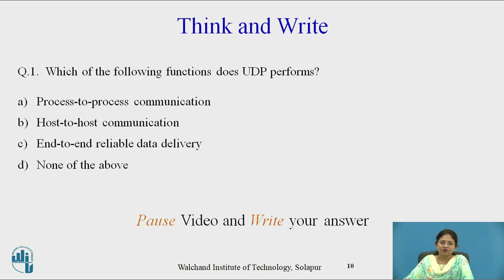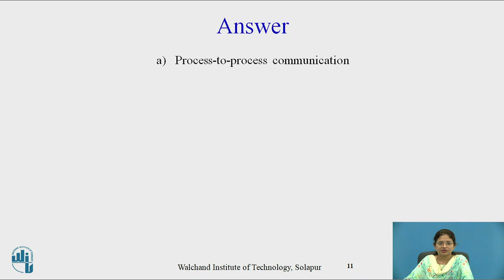Pause the video and write your answer. The question is: which of the following functions does UDP perform? Options are: A) process-to-process communication, B) host-to-host communication, C) end-to-end reliable data delivery, and D) none of the above. The answer is process-to-process communication.